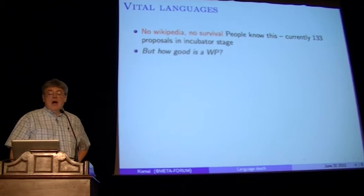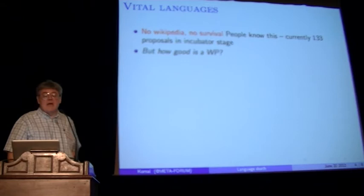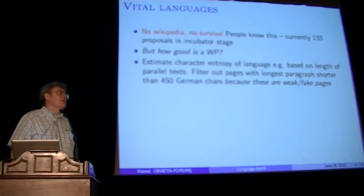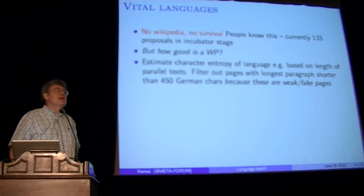How good is a Wikipedia? Here we come to a little bit of the technical work we have done in this area. We begin by estimating the character entropy of languages. This is very easy — you can do this by doing character counts, or you can do it based on the length of parallel text. We used the Universal Declaration of Human Rights, because it's available in almost all the languages that we deal with, but we have also fallen back on other parallel texts where needed.